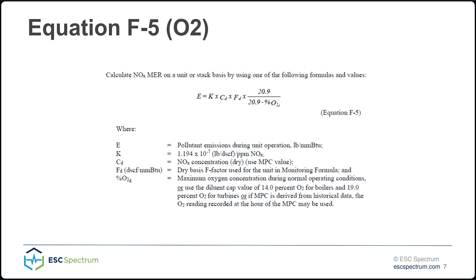In the monitoring plan instructions, it's very clear how to calculate this. If you're calculating NOx MER and your diluent is O2, this is the formula you will use — equation F5, which is identical to equation 19.1. I had a pre-question about what's the best diluent to use so that you're not using the highest number possible for missing data substitution. That's definitely dependent on site operation and equipment. You can have a conversation with the technicians about that if there's something you're wanting to change.